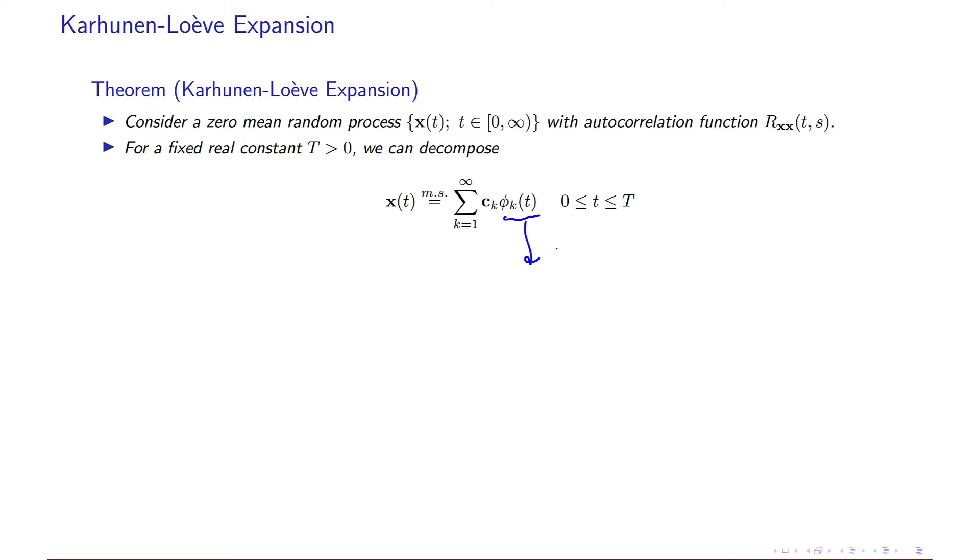So these signals are deterministic, and they are orthogonal. That means that if you calculate the dot product of phi k of t times, let's say, phi L of t.